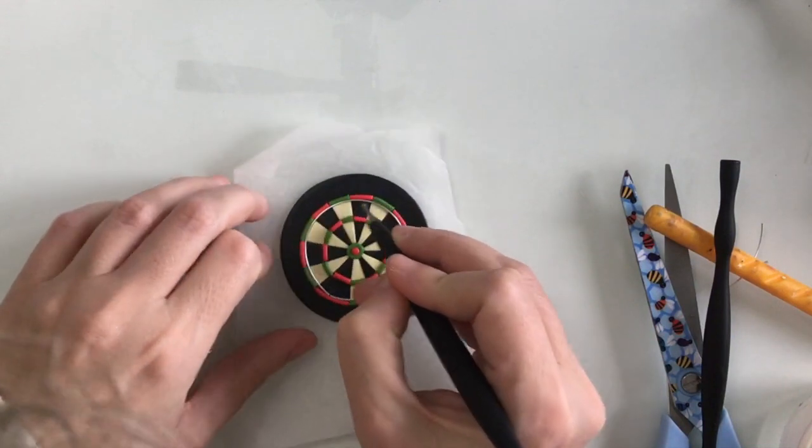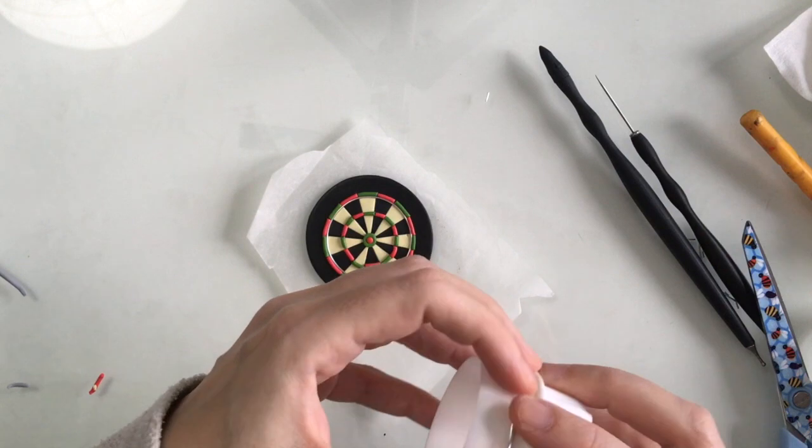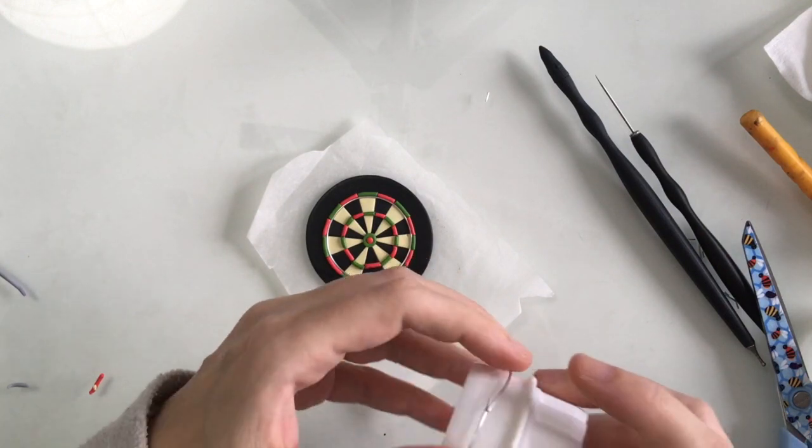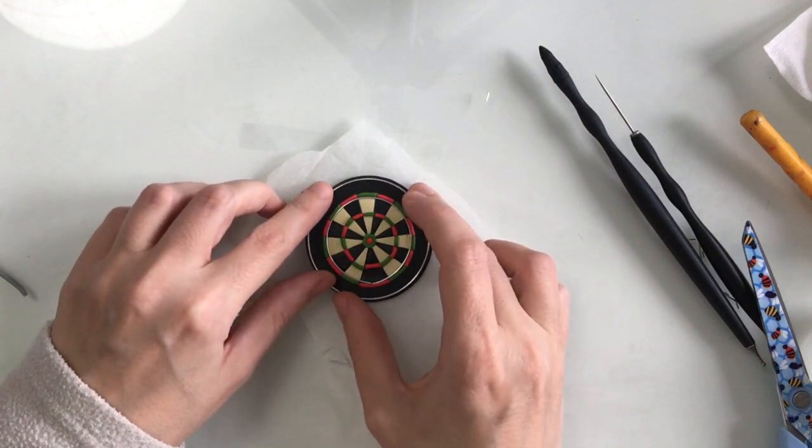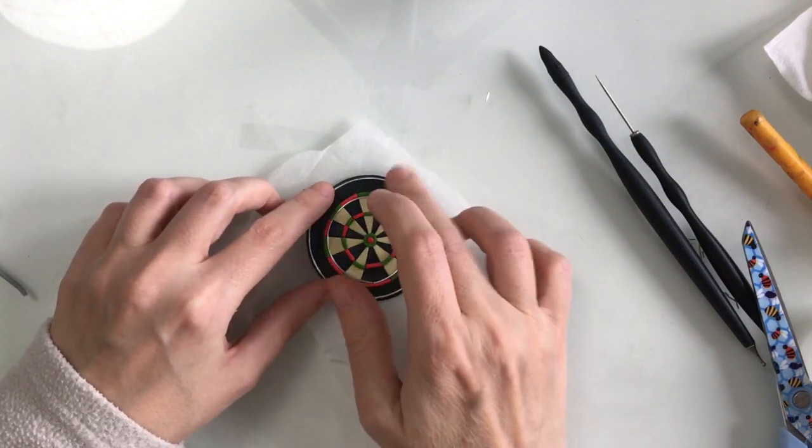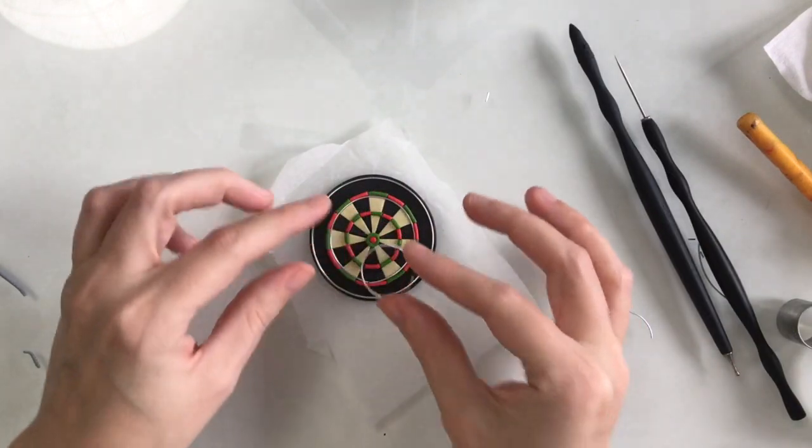I'm just going to press it in slightly with my small ball tool here, and again just curving my wire with my cookie cutter. That's going to go around the outside and just press it in lightly, and a small one for the center.